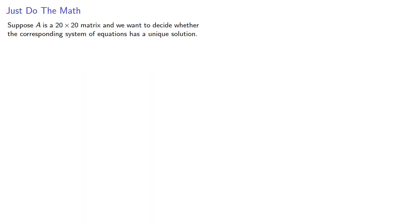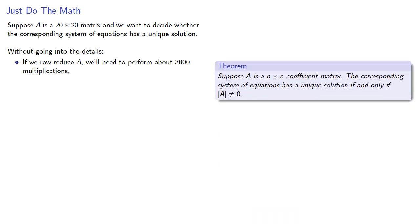For example, suppose A is a 20 by 20 matrix, and we want to decide whether the corresponding system of equations has a unique solution. Without going into the details, if we row reduce A, we'll need to perform about 3,800 multiplications, or we could use our theorem and compute the determinant.